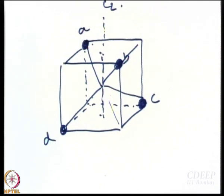Is there any other C2? Yes. Now it is easy to figure out — you have to join the face centers of opposite faces. How many pairs of opposite faces are there? 3. So there are going to be 3 C2 axes and they are going to be perpendicular to each other — one like this, one like this, one like this. These are the X, Y, Z Cartesian axes. The 3 C2s form the 3 Cartesian axes.